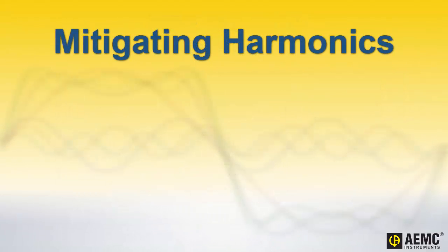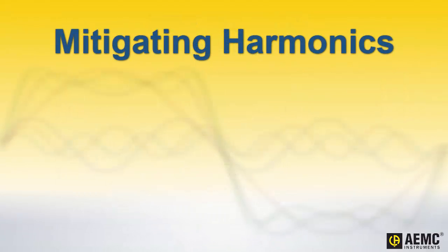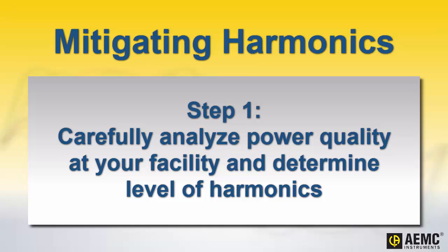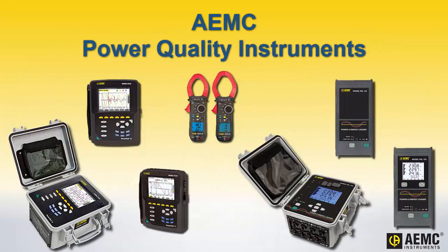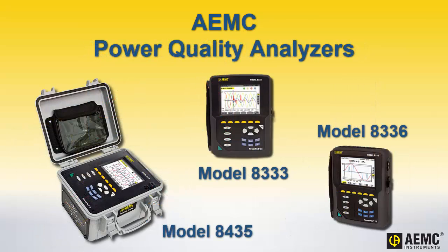Fortunately, there are several mitigation techniques that can minimize and even eliminate the impact of harmonic distortion. A first step in this process is to analyze the quality of the power in your facility. This will help you assess how significant a problem THD is at your location, and which measures will likely be the most effective for addressing it. AEMC offers a full line of power quality analyzers, loggers, and meters that incorporate the most up-to-date measurement technology and communication options.